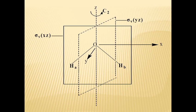The symmetry operation C2 means rotating at 180 degrees at the Z axis. This changes the position of HA and HB. σV(XZ) does not bring any change in the position of hydrogen atoms A and B. Whereas σV(YZ) reflects HA and HB and changes their positions. The identity operation does not bring any change.